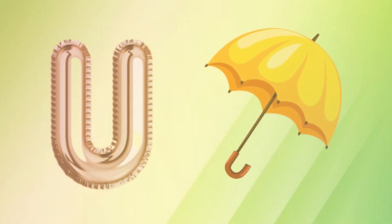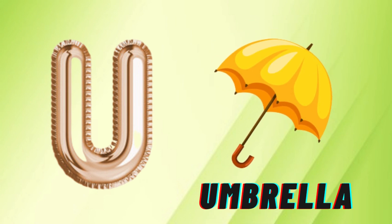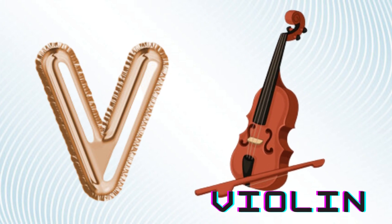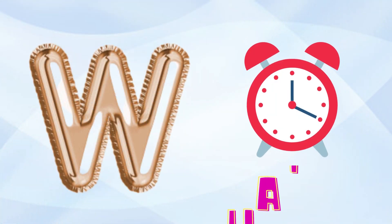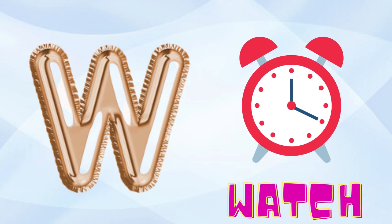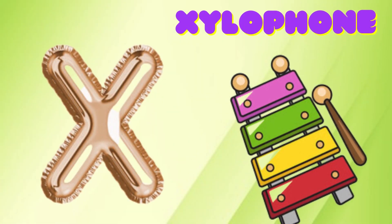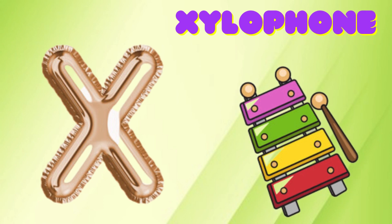U is for umbrella, u-u-umbrella. V is for violin, v-v-violin. W is for watch, w-w-watch. X is for xylophone, x-x-xylophone.